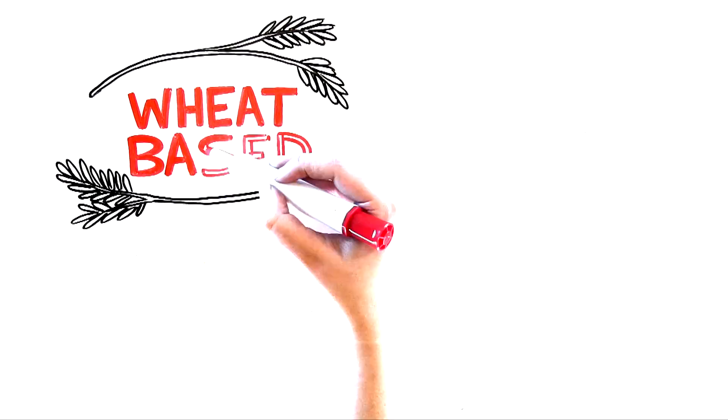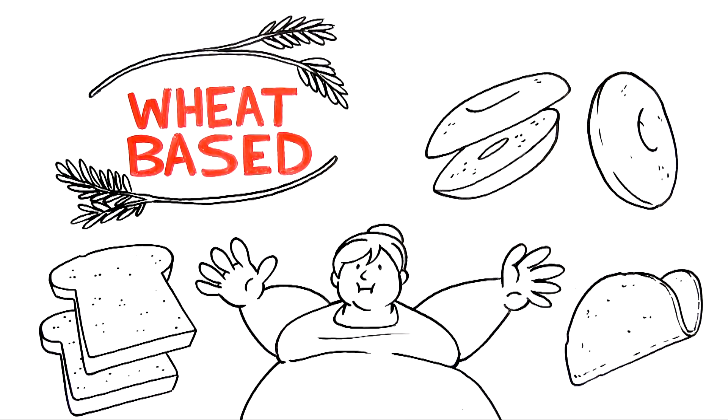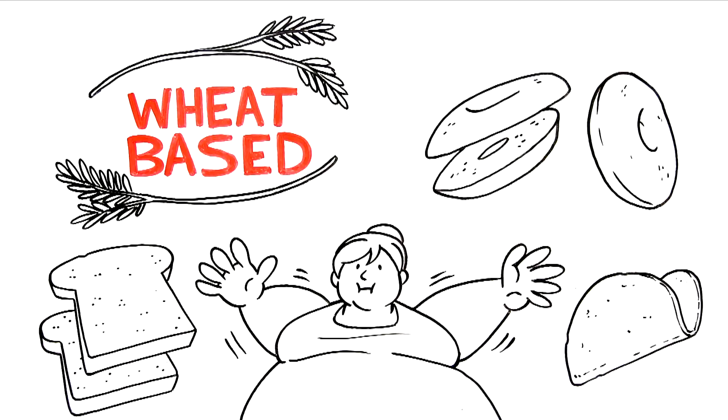Next up are wheat-based foods such as breads, bagels, and tortillas, as these gluten-filled foods are shown to cause significant inflammation in women. When in a state of inflammation, your production and sensitivity to your number one fat-burning hormone, leptin, is compromised.